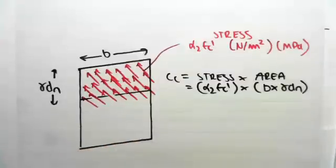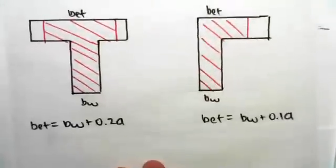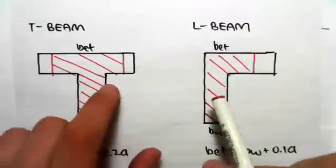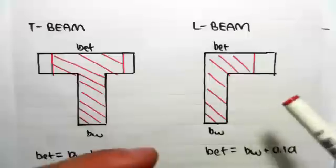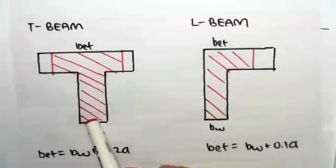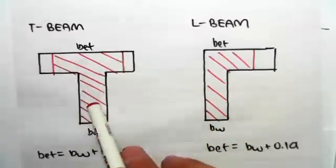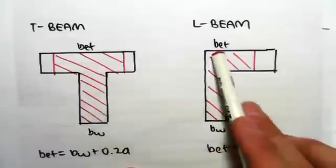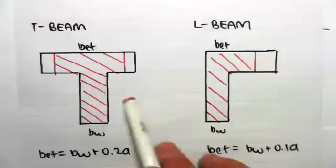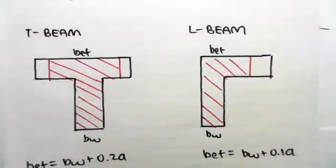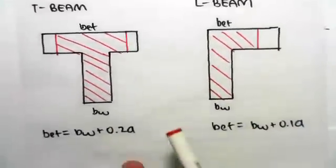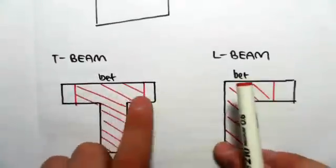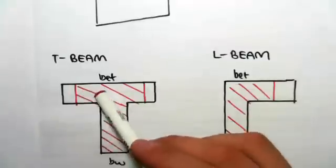And the last thing we need to talk about now is just the effective width. So for a T-beam and L-beam, these are special cases. And the reason is because when we have a structure, we tend to have a beam and a slab, and they act as one section. So we have a floor slab and a beam, and this is a floor slab and a beam at the end of a building. So we have L-beams and T-beams. They're quite common in concrete structures. And we say that the effective width, which is the width that the concrete section is actually able to take.